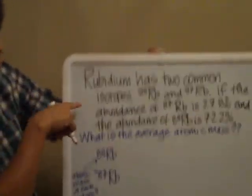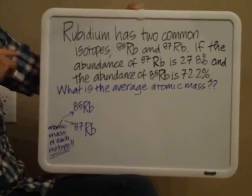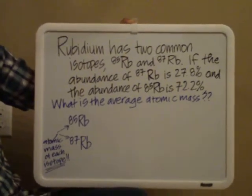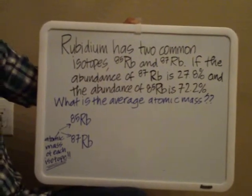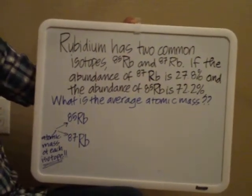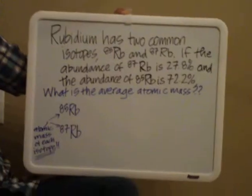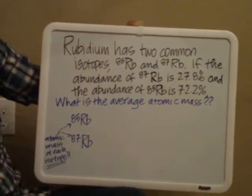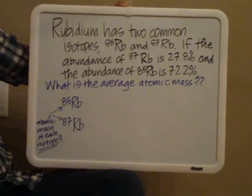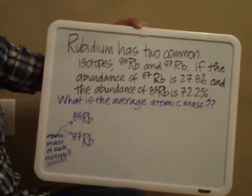The problem I'm going to show you is right here. It says rubidium has two common isotopes, rubidium-85 and rubidium-87. If the abundance of rubidium-87 is 27.8% and the abundance of rubidium-85 is 72.2%, calculate the average atomic mass for rubidium.